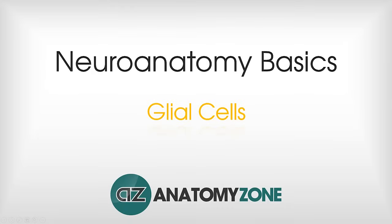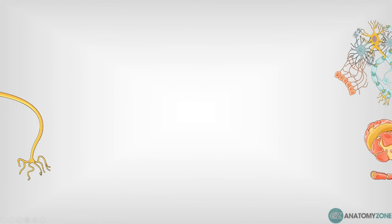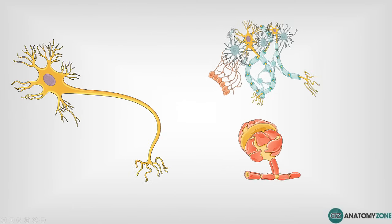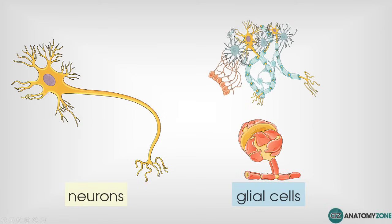Hi, this is Peter from AnatomyZone and this is another neuroanatomy basics tutorial. In this one we'll be taking a look at glial cells. There are two types of cells in the nervous system: you've got neurons and you've got glial cells. Glial cells are the supportive cells which support neurons in their function of communication within the nervous system.